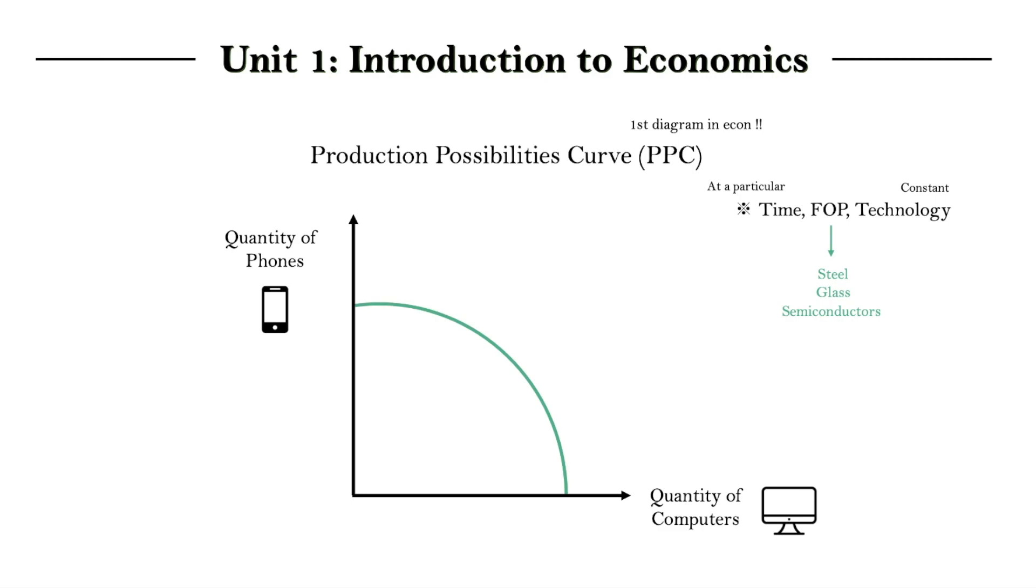So, with the resources we have, we need to choose how much of either good we're going to make, right? And any point on the curve, such as point A, represents a choice made, where there is full employment of resources as well as efficiency.